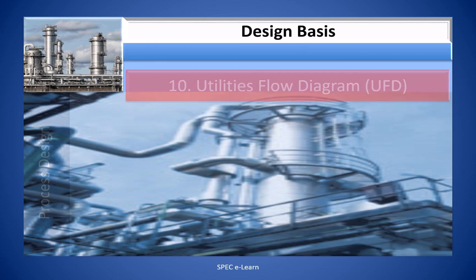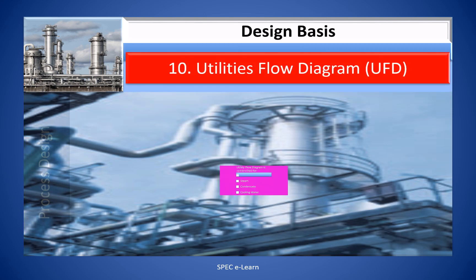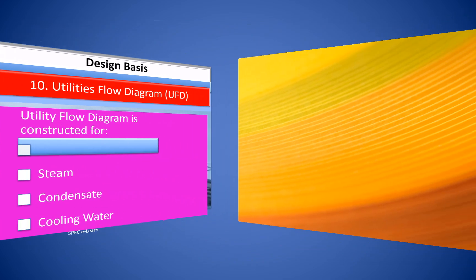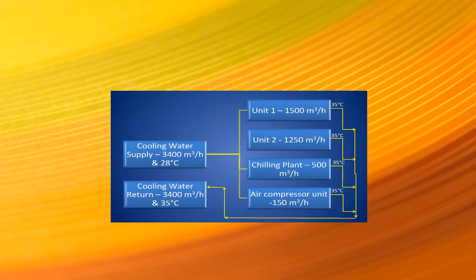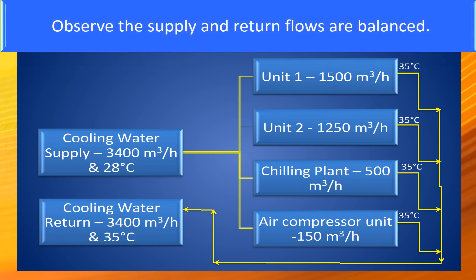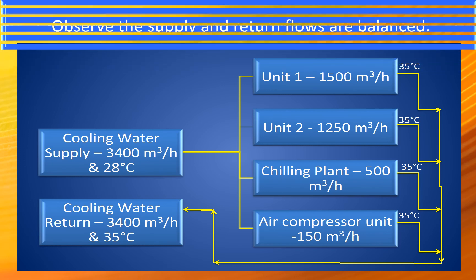Ten: Utility Flow Diagram. A utility flow diagram is constructed for steam, condensate, and cooling water. For example, the cooling water balance for a typical plant is as shown in the figure below. Observe that the supply and return flows are balanced.